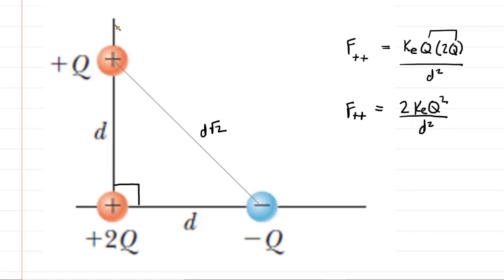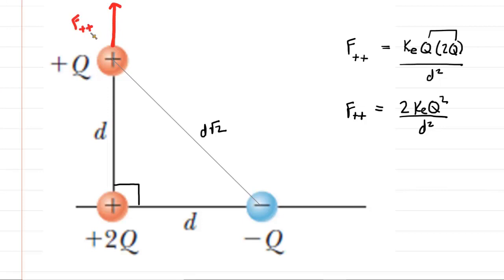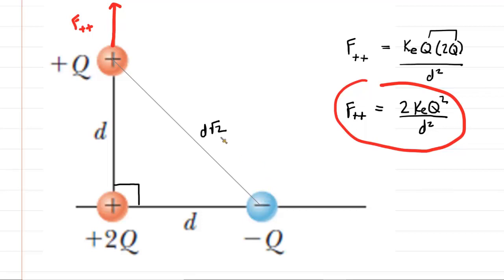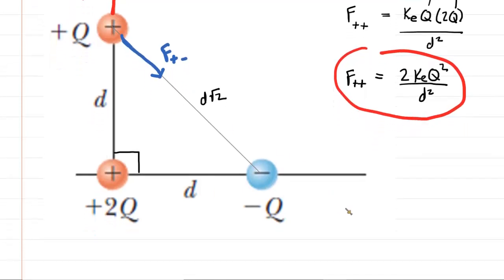It's also a good idea to label the direction of that force. This charge is positive and the charge beneath it is also positive. Like charges repel, so the force on this charge would be a repulsive force — pushed away from the other positive charge. We're going to keep that direction in mind. We also need the magnitude of the other force, between the positive and negative charge, which would be an attractive force. We can draw that attractive force pulling this positive charge towards the negative, and label it F(positive, negative).